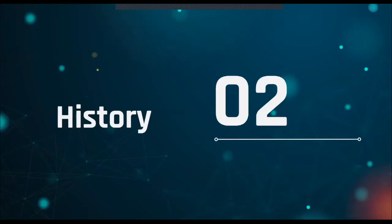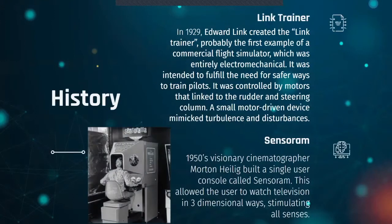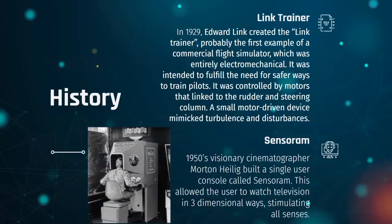Now let's look at the history behind virtual reality — some of the early examples and what it was used for. Starting in 1929 with the Link Trainer: Edward Link created the Link Trainer, the first example of a commercial flight simulator. This device was entirely electro-mechanical, intended to fulfill the need for safer ways to train pilots. It was controlled by motors linked to the rudder and steering column, and a small motor-driven device mimicked turbulence and disturbances, providing haptic feedback for the user.